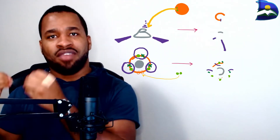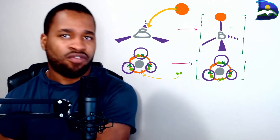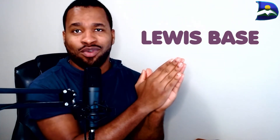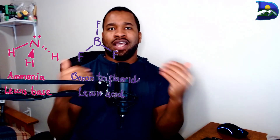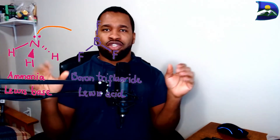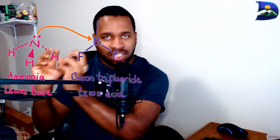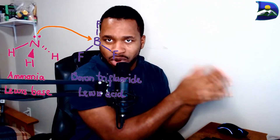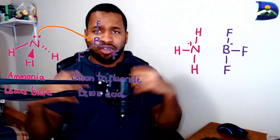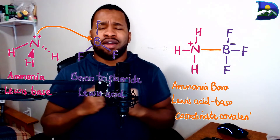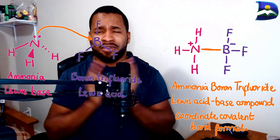On the other hand, ammonia acts as a Lewis base — it has a lone pair and is willing to donate it. This results in the formation of a positively charged nitrogen, and boron takes on a negatively charged state. So you form a Lewis acid-base compound as a result of that coordinate covalent bond reaction.